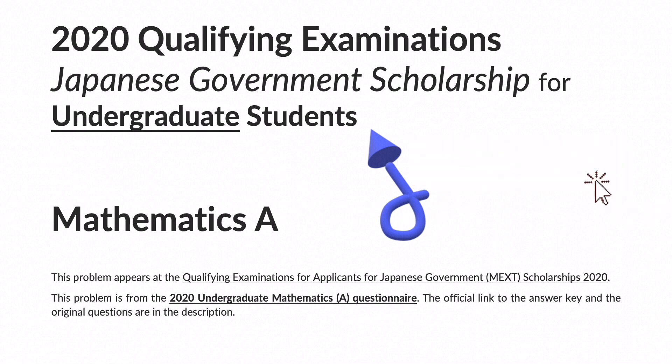This problem appears at the Qualifying Examinations for Applicants for Japanese Government MEXT Scholarships 2020. This problem is from the 2020 Undergraduate Mathematics A Questionnaire. The official link to the answer key and the original questions are in the description.